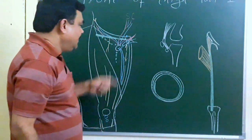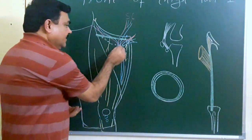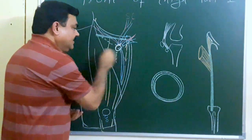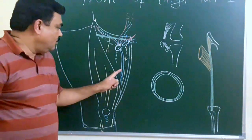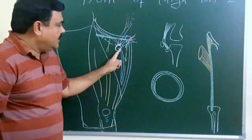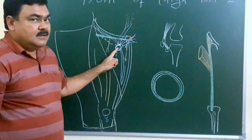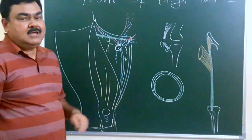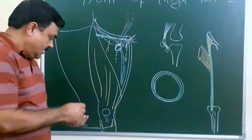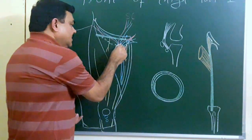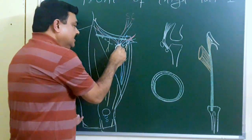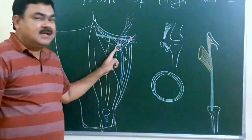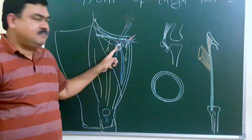Another modification of the deep fascia is the saphenous opening, through which the great saphenous vein enters deep to the deep fascia and joins with the femoral vein. This opening is filled with a fascia known as the cribriform fascia.